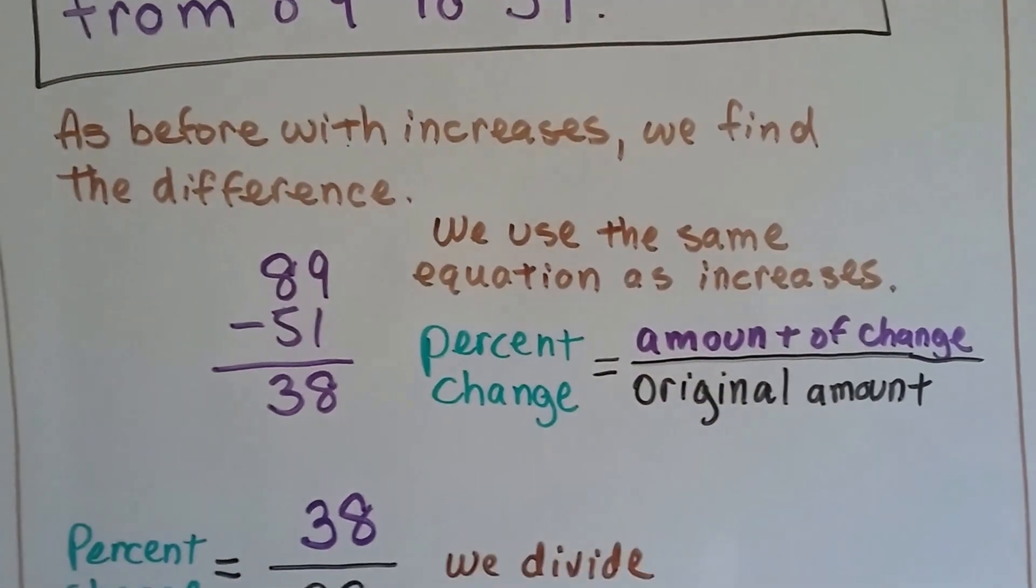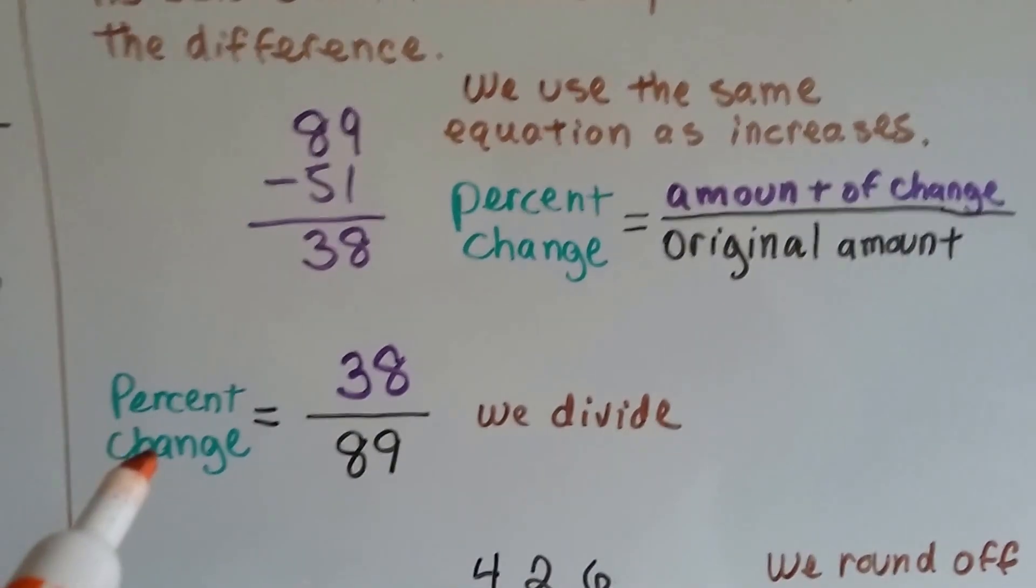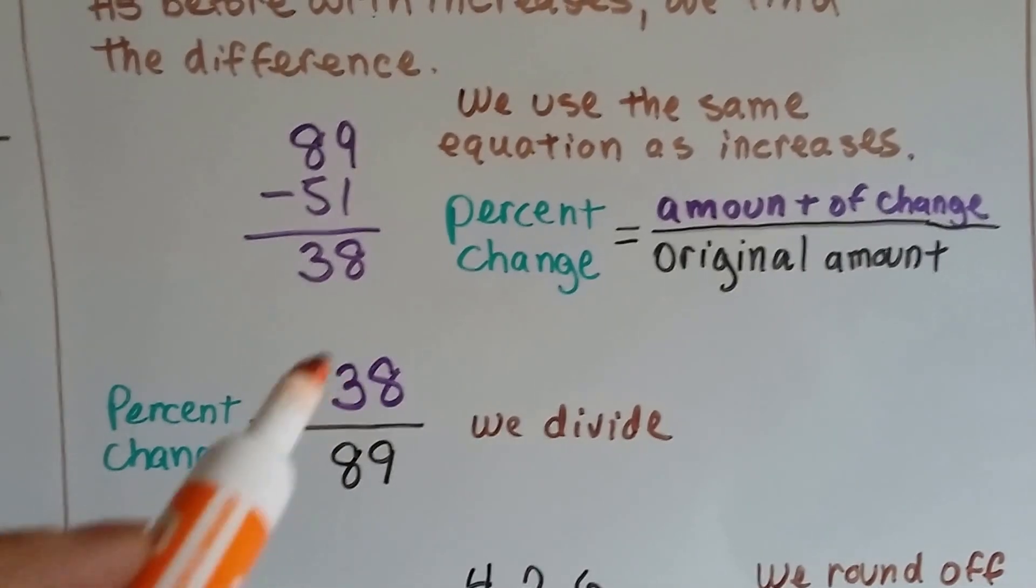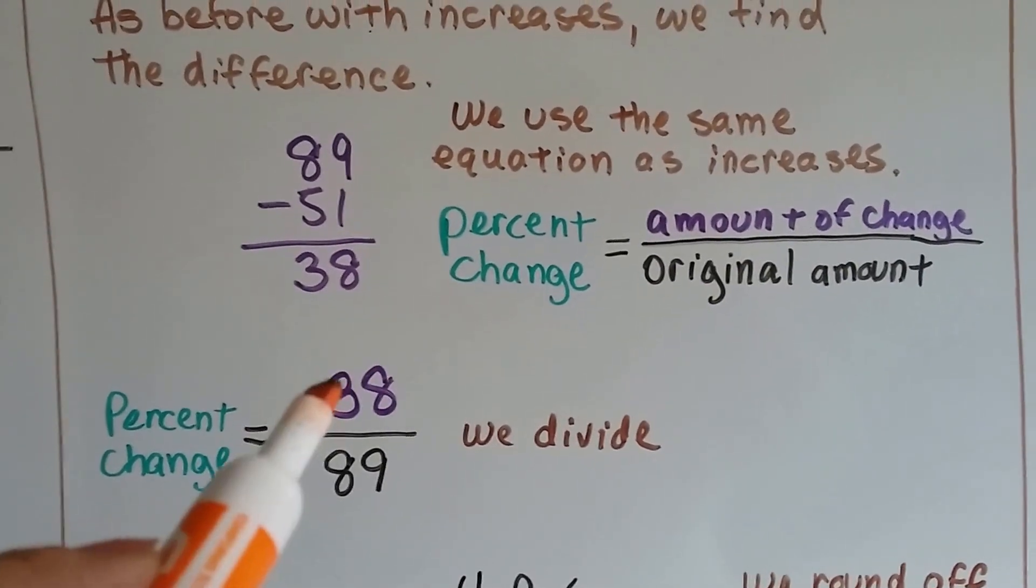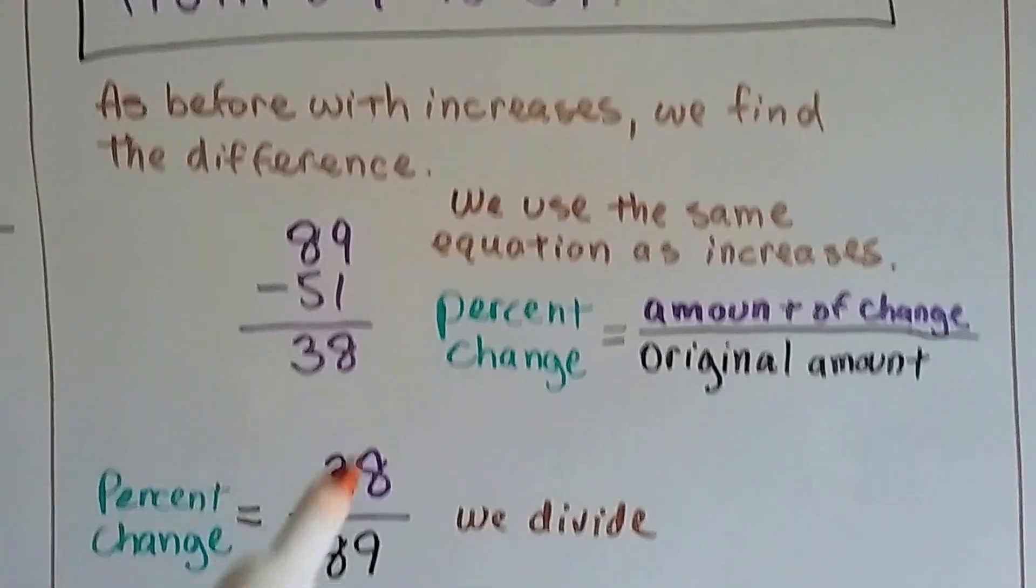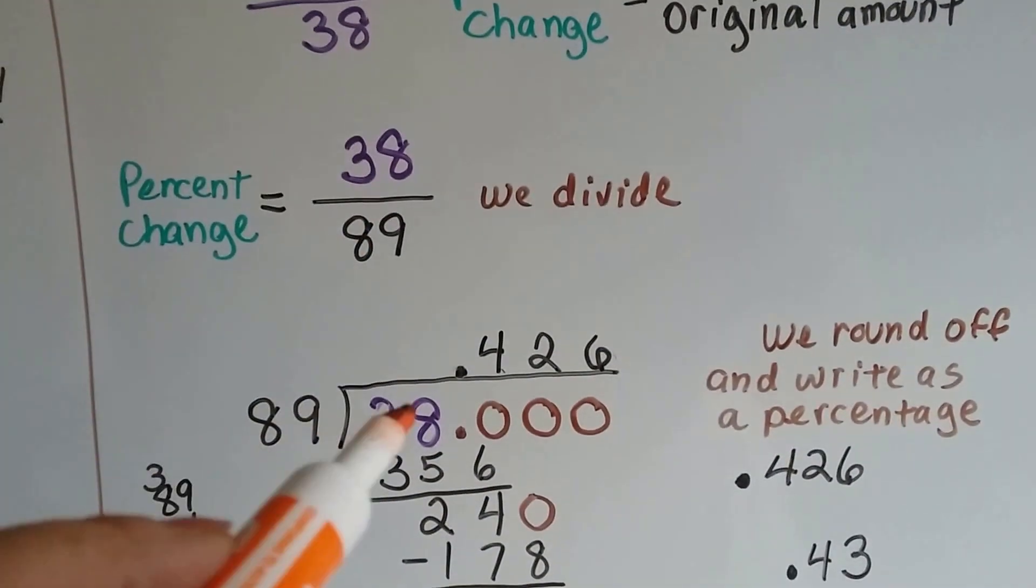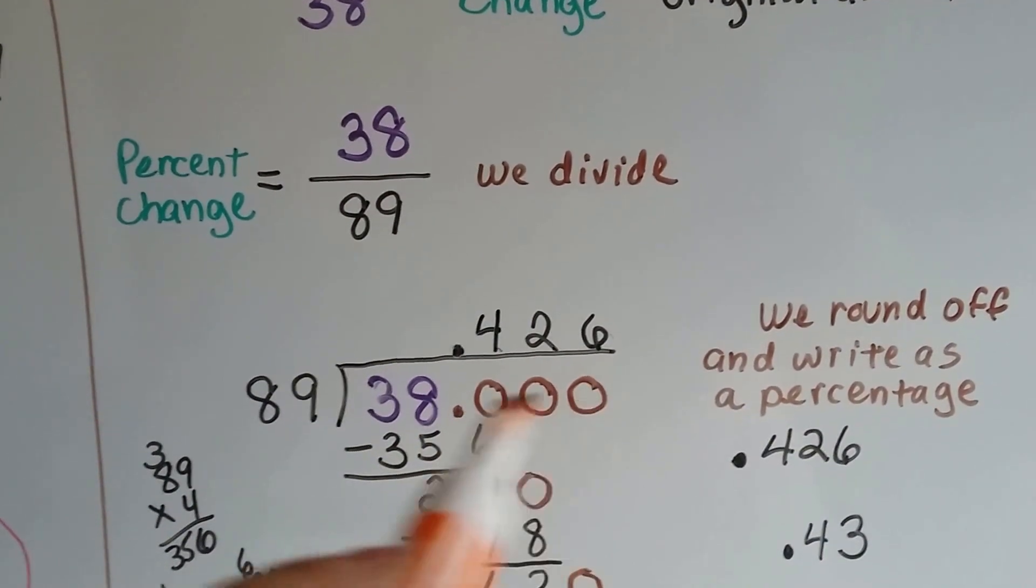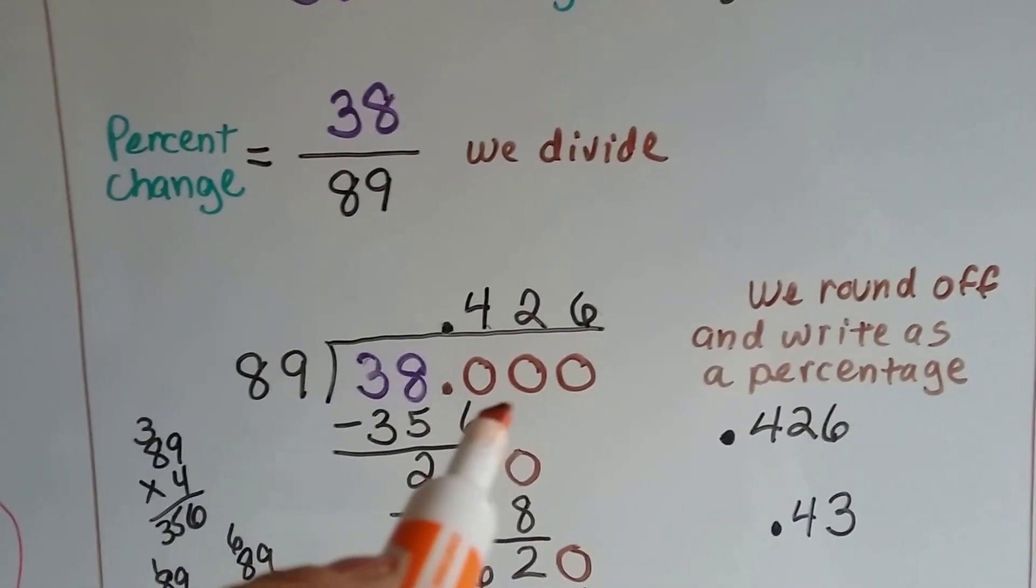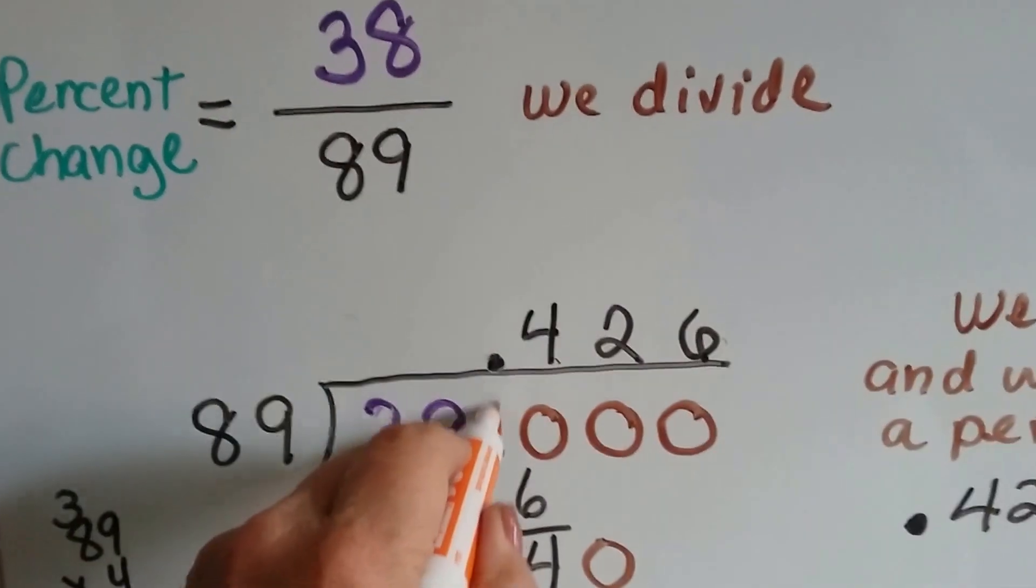And then this is a division problem. Here's our percent change, here's our difference, the amount of change, 38. The old amount is $89. And we divide. 89 goes into 38, and we have to add a decimal point and some zeros to that 38 because it's not big enough. We put the decimal point straight up, that's where it belongs.